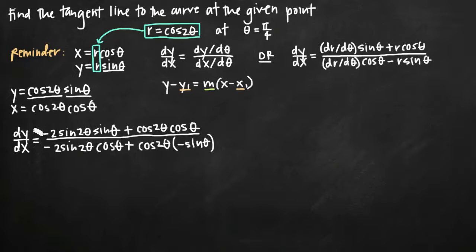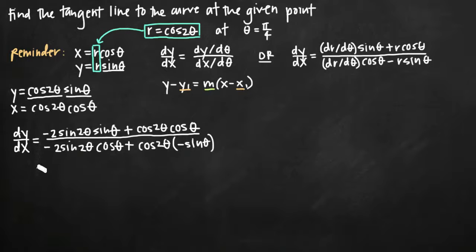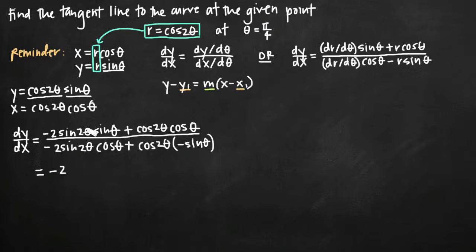Now that we have an equation for dy/dx, we plug in theta equals pi over 4. In the numerator: negative 2 times sine of 2 theta — plugging in pi over 4 gives sine of pi over 2, which equals 1 — so we get negative 2 times 1. Then sine of theta, which is sine of pi over 4, equals square root of 2 over 2.